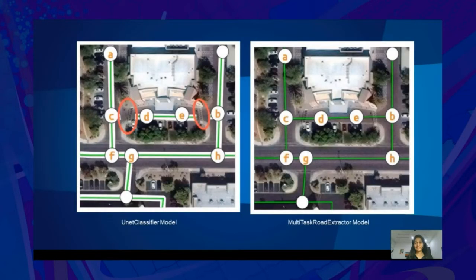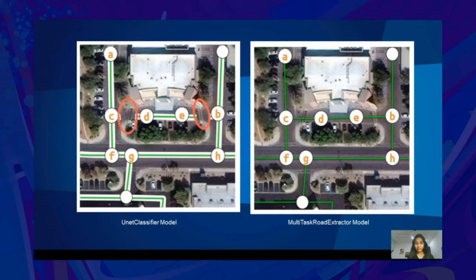Semantic segmentation models like UNet classifier, PSPNet, or DeepLab can classify road pixels. However, road networks from satellite imagery often produce fragmented road segments — sometimes because of shadows from clouds, trees, or because of similarity of road texture with other materials. So we have yet another model for pixel classification that can improve road connectivity and generate better road masks. In this image on the left, you see the results generated by the UNet classifier model, which hasn't generated a connected road network. Whereas on the right, you see the multitask road extractor model result, which has done a pretty good job. This model also performs orientation detection along with segmentation, which gives better road connectivity.